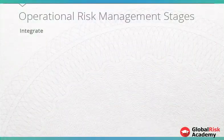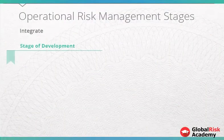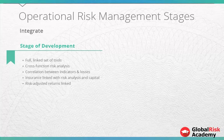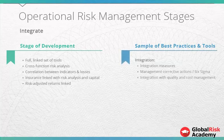In the Integrate Development stage, we need to achieve a full linked set of tools, cross-function risk analysis, correlation between indicators and losses, insurance linked with risk analysis and capital, and risk-adjusted returns linked. Examples of best practices and tools at this stage include integration measures, management corrective actions, Six Sigma, and integration with quality and cost management.